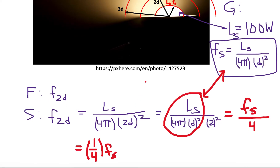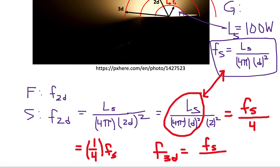We can do the same thing at a distance of 3d. The flux at 3d keeps our flux at the surface, divided by — since it's an inverse square law — three squared, because we're going three times the original distance. Three squared is nine, it's in the denominator, so we end up with one ninth of the original flux at the surface of the light bulb.